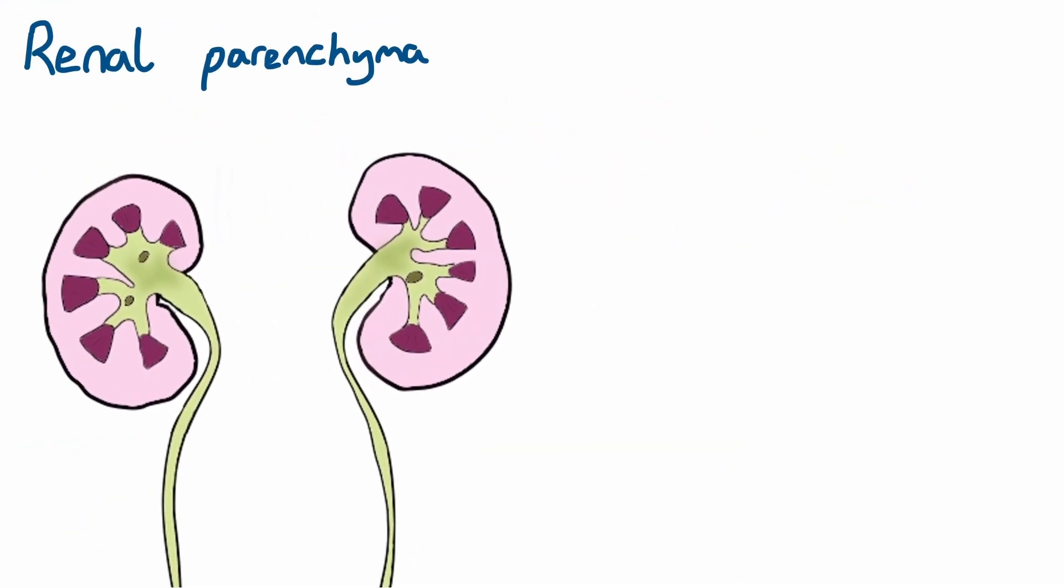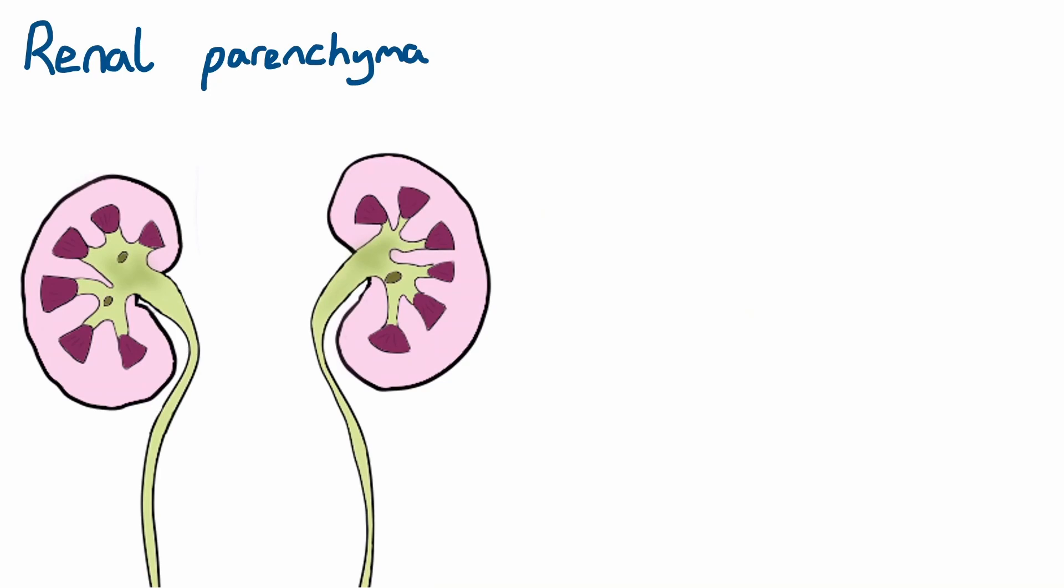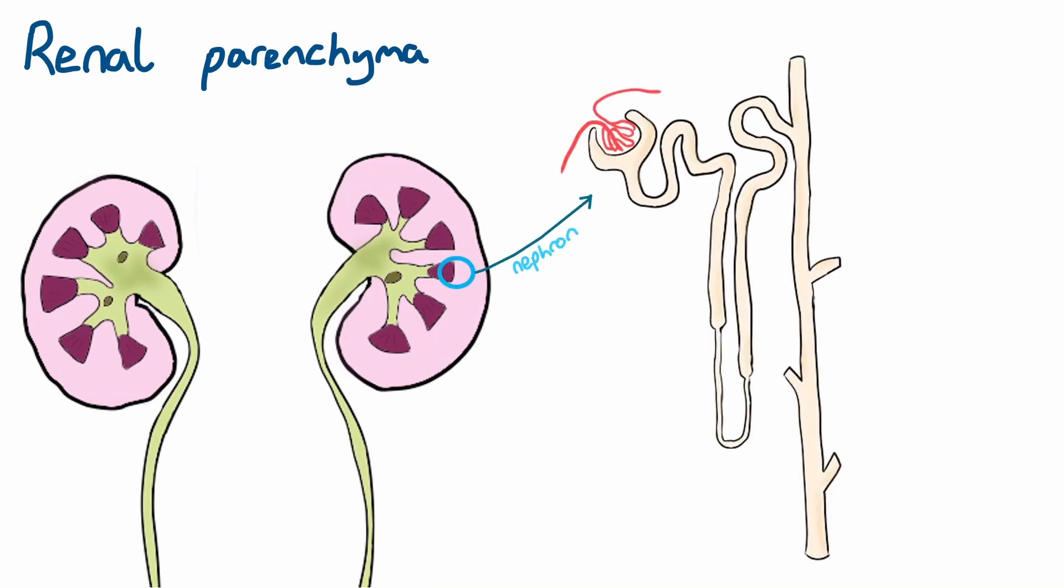Urine is formed in the nephrons of the kidneys. These are microscopic structures that span both the cortex and medulla. Each kidney has around 1 million nephrons, and in 24 hours, all the nephrons in both kidneys will filter 200 litres of blood to remove waste products,